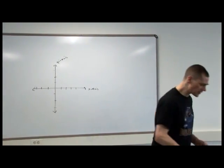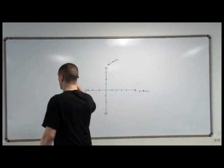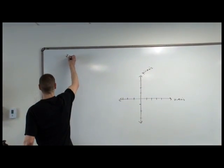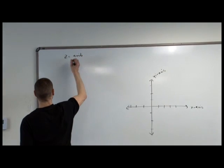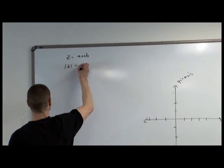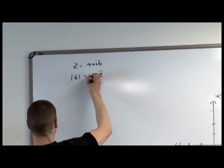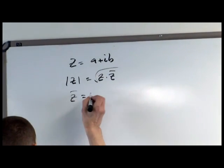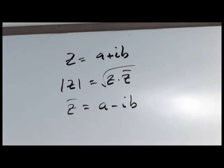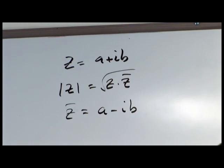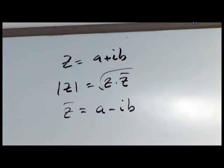Okay, so what were we talking about? We said for z equals a plus ib, the norm of z is z times z bar square root. And z bar, of course, is the complex conjugate, is a minus ib.